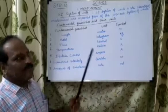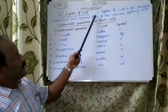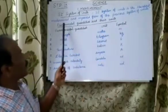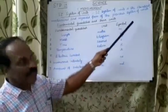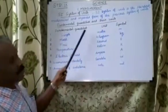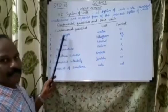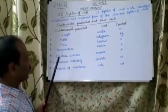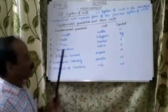Next topic: SI system of units. The SI system of units is the standard, modernized, and improved form of the previous system of units. There are seven fundamental quantities: length, mass, time, temperature, electric current, luminous intensity, and amount of substance.